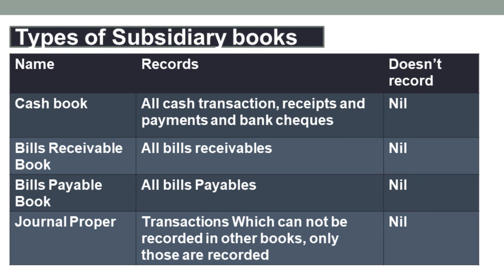In journal proper, the transactions which cannot be recorded in other books — only those transactions can be recorded in journal proper.